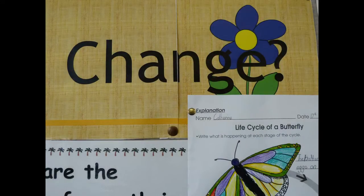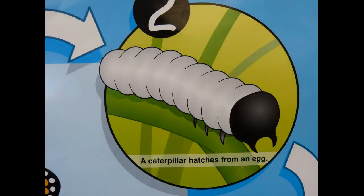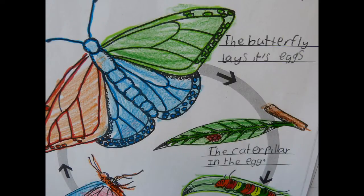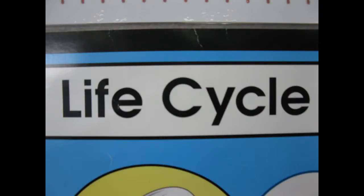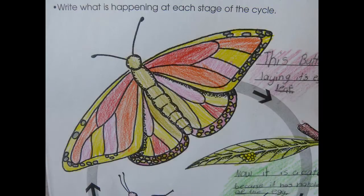The life cycle of a butterfly goes: first it goes from an egg, then to a caterpillar, then it sheds its skin, then it goes into a cocoon, then it turns into a butterfly.